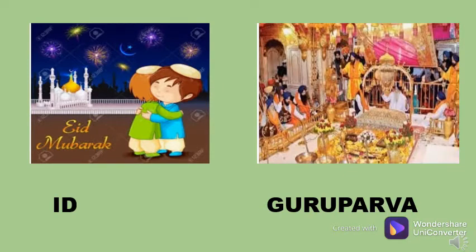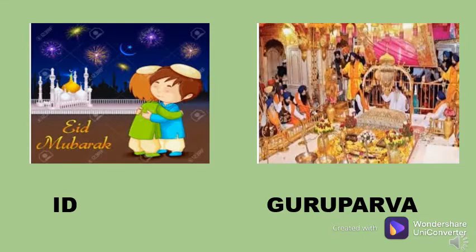Here we can see two boys greeting each other saying Eid Mubarak — this is the picture of the festival Eid. Eid comes after 30 days of Ramzan, when Muslim people have fasts for 30 days. Then they celebrate Eid: on that day they wear new clothes and go to the mosque for prayers.